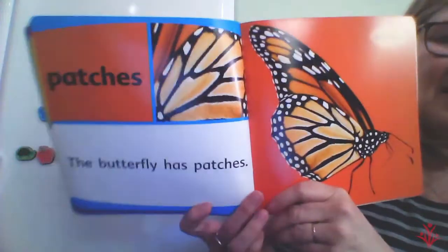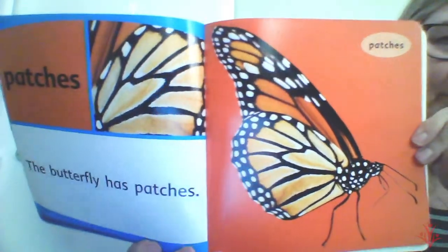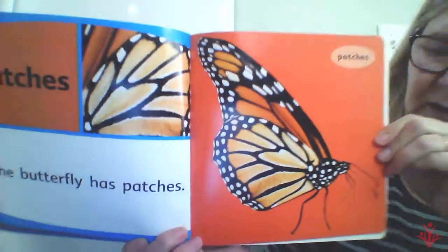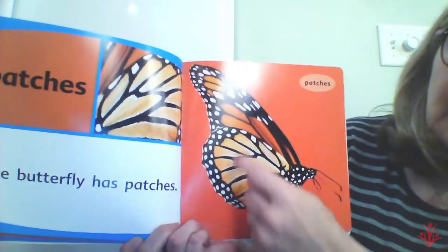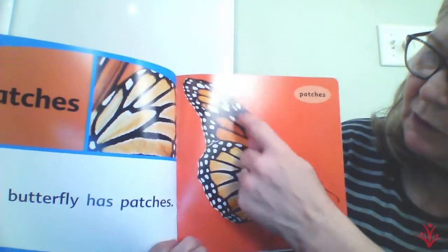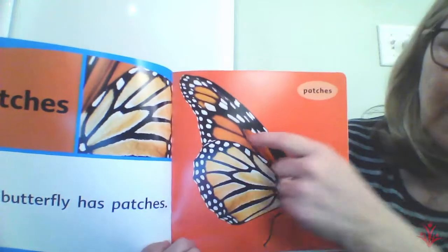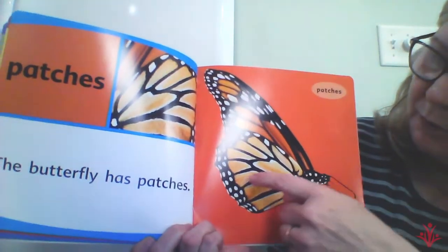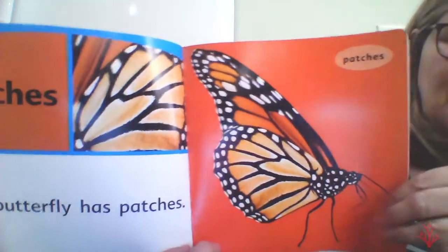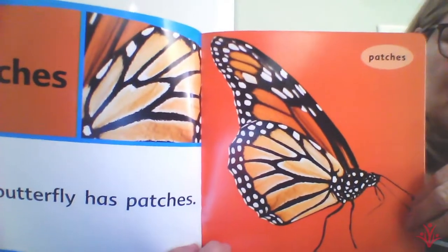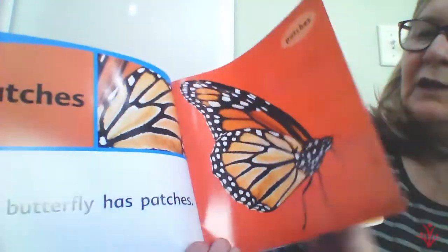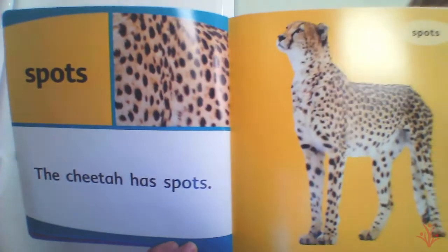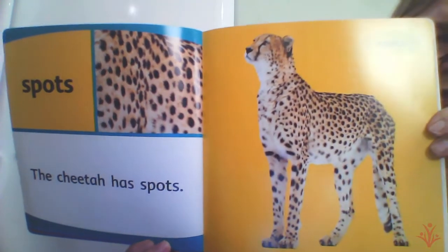Patches — look at the beautiful monarch butterfly. This butterfly has patches, but I can also see some patterns here with all these spots and nice little patches all around. Can you see the pattern in that butterfly? Spots — this cheetah has lots of spots, and I can see a pattern in there too.